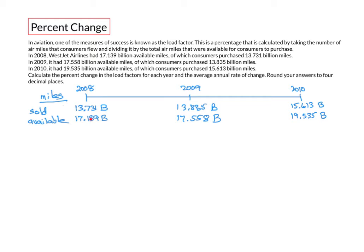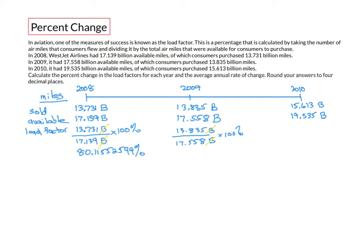Load factor is the ratio of these two numbers as a percent. So in 2008, the load factor would be 13.731 billion divided by 17.139 billion available miles, multiplied by 100%. The billions cancel, and we end up with 80.11552599%. Using the same method, the load factor for 2009 is 78.7959943%, and the load factor for 2010 is 79.92321474%.